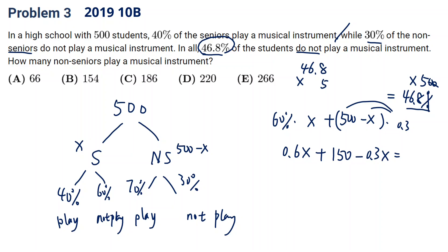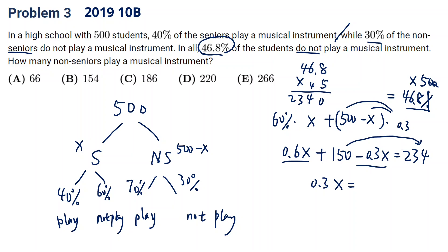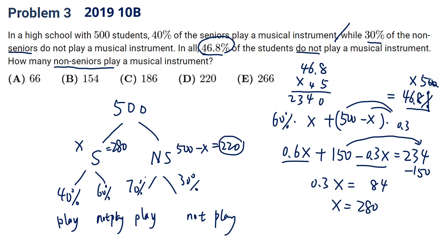So 100% and 100% cancel. Times 5 we will get 234. Now let's combine these terms. 0.3X moves over to become minus, so it's 84. X will be 280. So seniors is 280. The question is, how many non-senior students play a musical instrument? Non-seniors will be 220. And the play: 220 times 70%, which is 0.7. We get 154. This is a very good example of a linear equation.